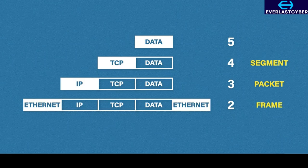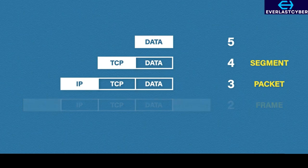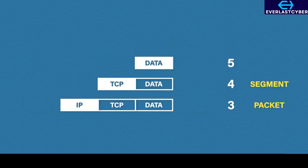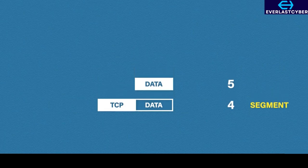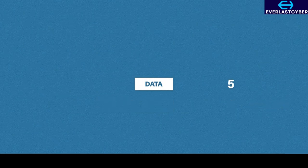Once the data has been transmitted, the receiving computer decapsulates the information. It will then check the destination MAC address for that frame, and if the frame is destined for our computer, it is processed further. The computer then checks the IP information off the packet, and if the packet is destined for our computer, it is processed further. The transport information is read, and the application data is sent to the receiving application.